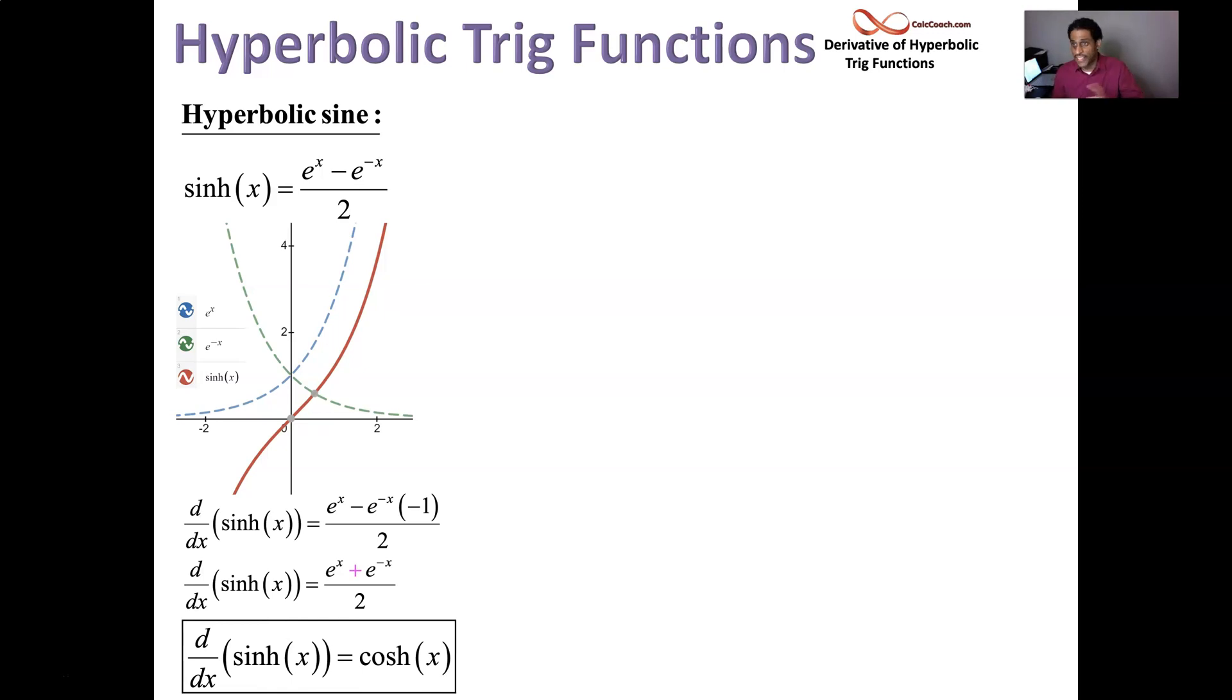Hyperbolic cosine is the exact same but with a plus sign. Take the same drawing and then add the blue and the green together and divide by 2. You end up with the red. Looks almost like a parabola shifted up one unit. It never gets any lower than 1.